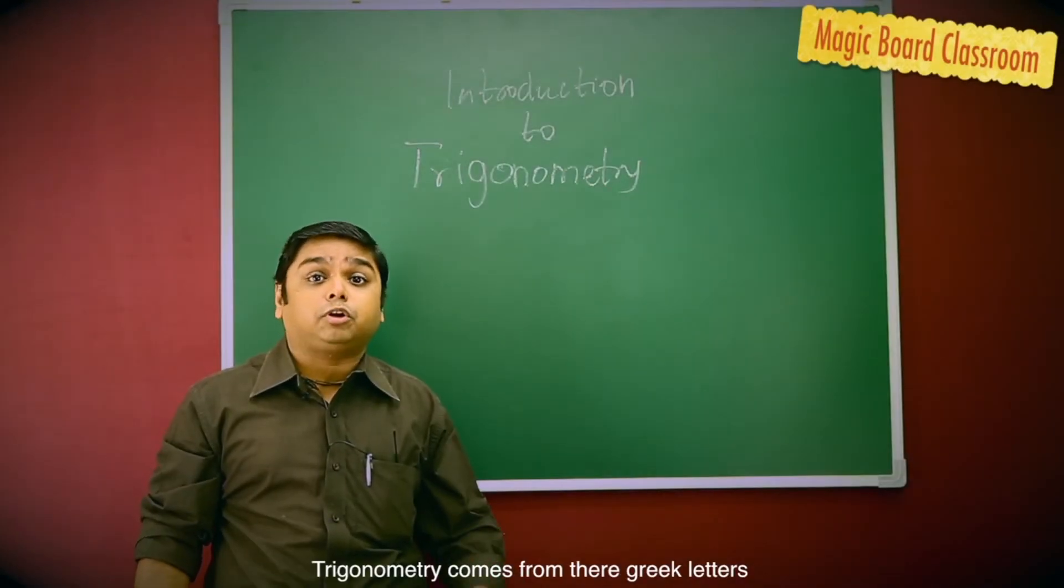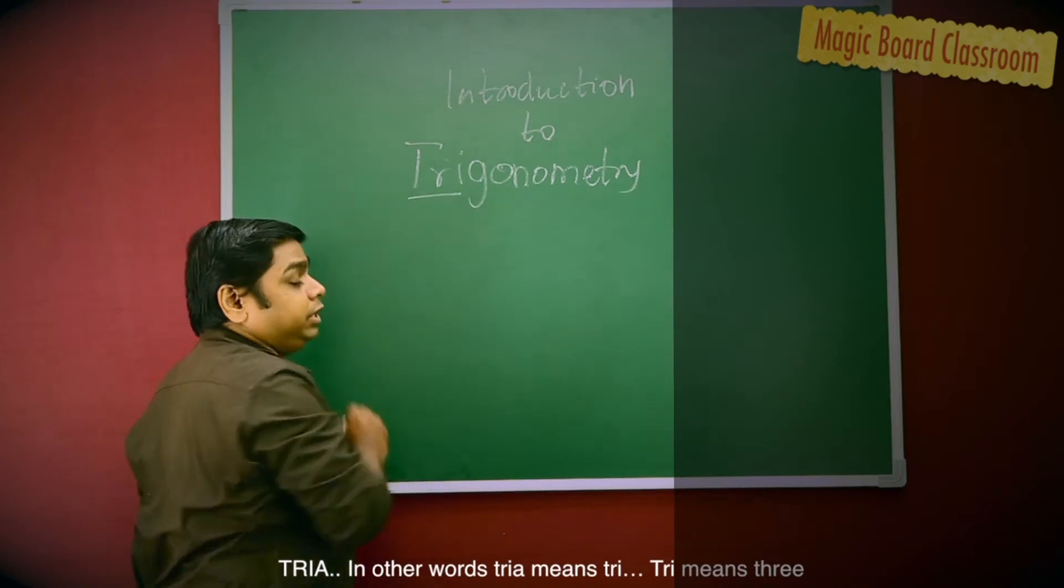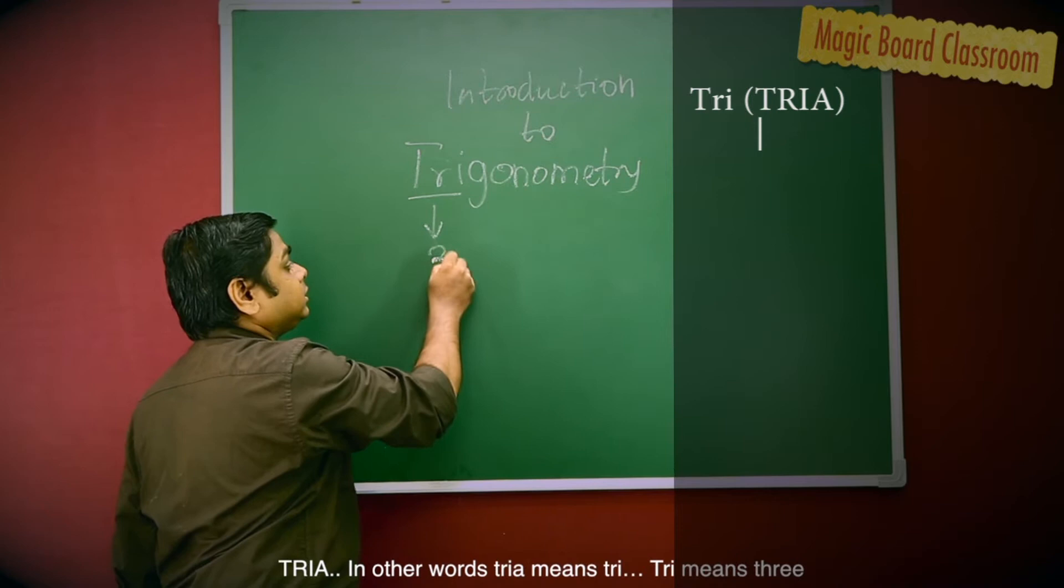Trigonometry comes from three Greek letters. What are they? Tree. In other words, tree means tri. Tri means three.